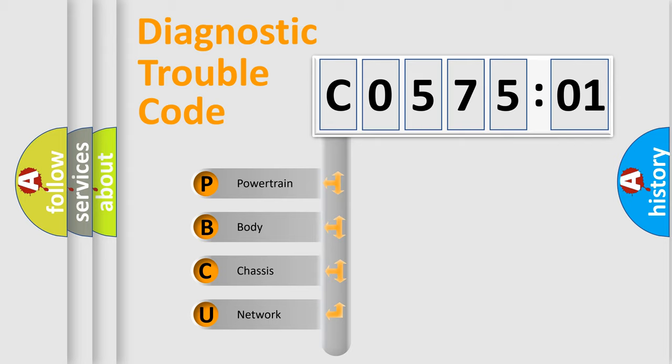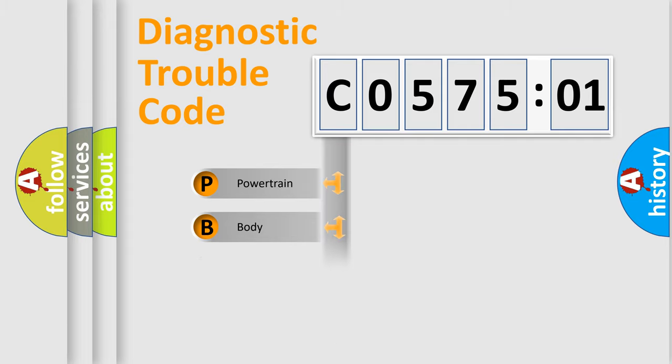We divide the electric system of automobile into four basic units: Powertrain, Body, Chassis, and Network.